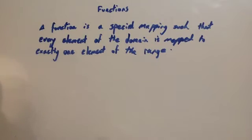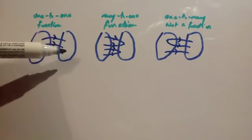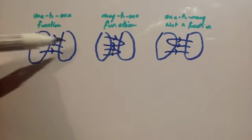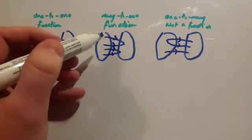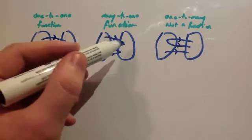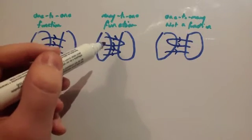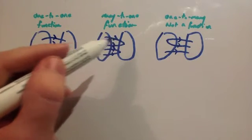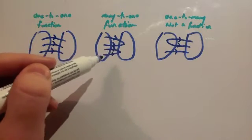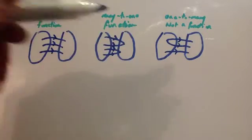Let's have a look at those in our mapping diagrams. A one-to-one function is where every element of the domain maps to exactly one element of the range — it just goes across mapping one-to-one. A many-to-one function would be something like the x-squared function, where two or more different values go to the same value of the range. For instance, one and minus one both go to one, and two and minus two both go to four. Because every single input — every element of the domain — goes to one value of the range, it is a function.